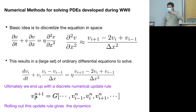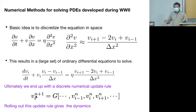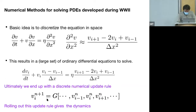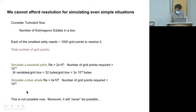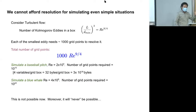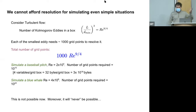Despite decades of investment we actually can't afford to fully resolve even simple situations. For turbulent flow, if you count the number of Kolmogorov eddies in a box—the smallest eddy scale goes like Reynolds number to the nine-quarters power—and you need roughly three points per eddy to resolve it, then even for something like a baseball pitch the total number of grid points becomes insane.